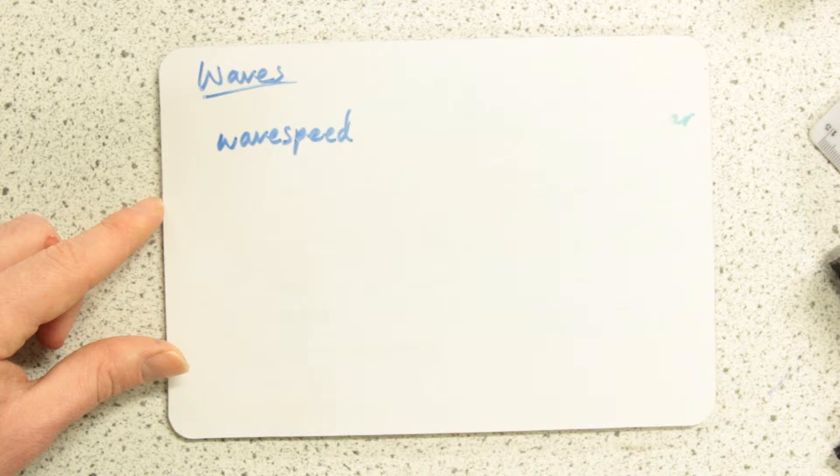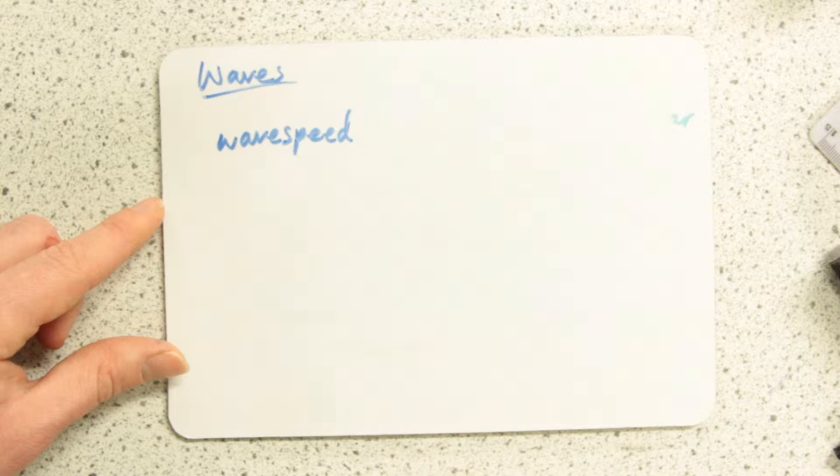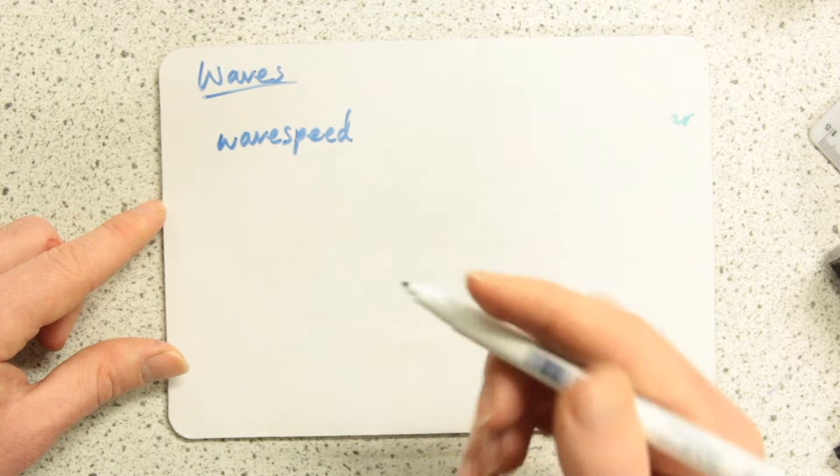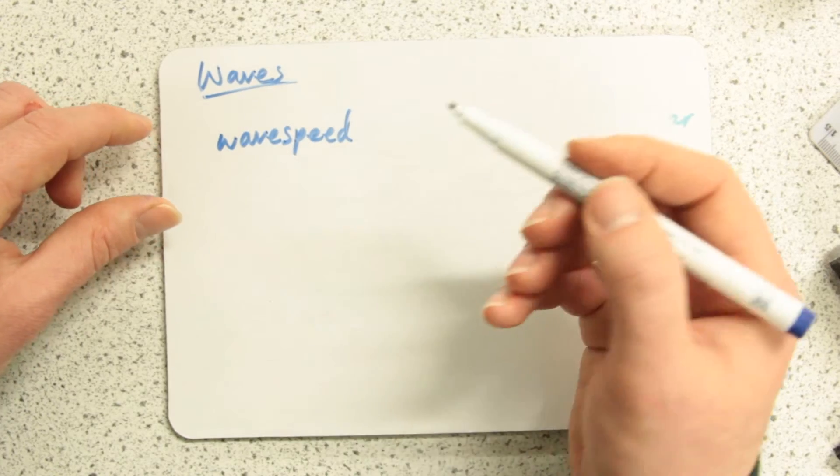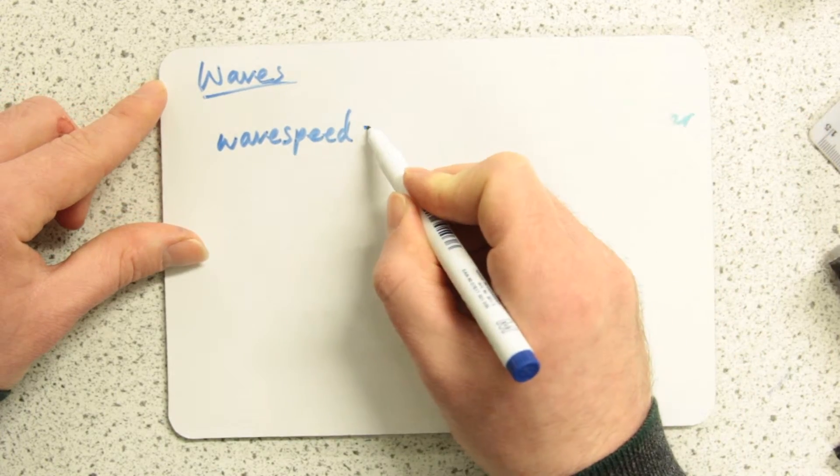In a vacuum, light will always travel at the same speed. Its frequency might change, its wavelength might change, but its wave speed will always be the same. So wave speed is constant for a given medium.